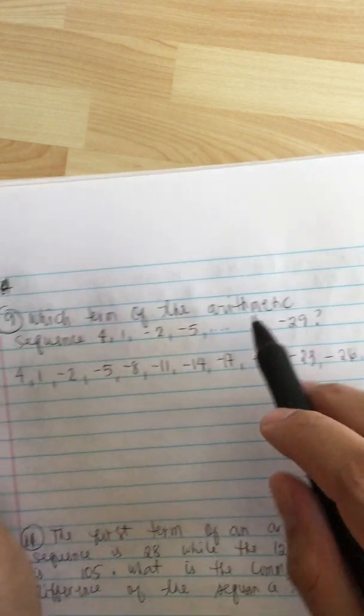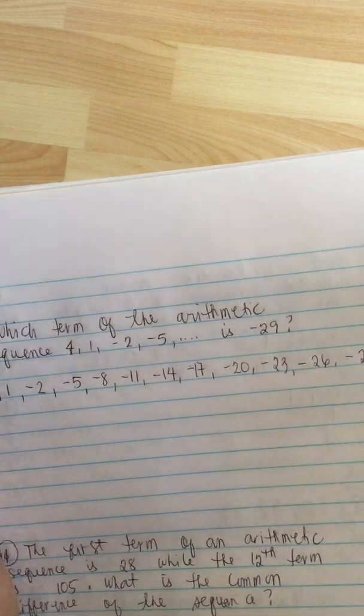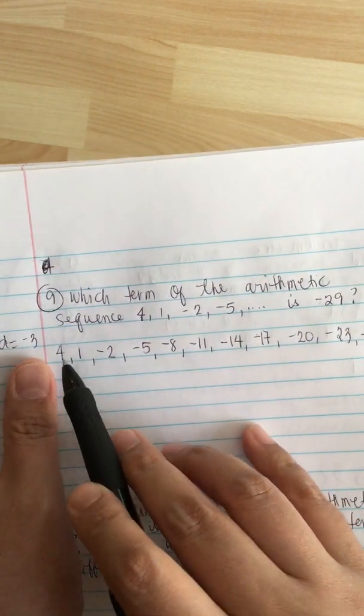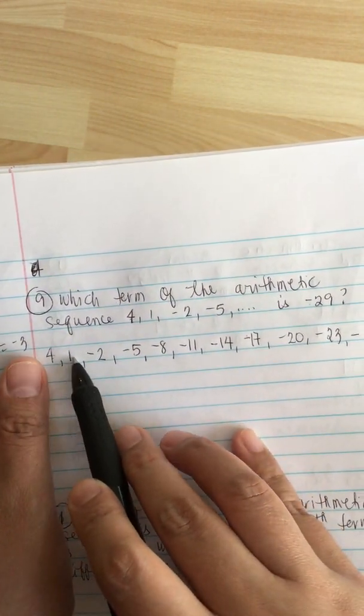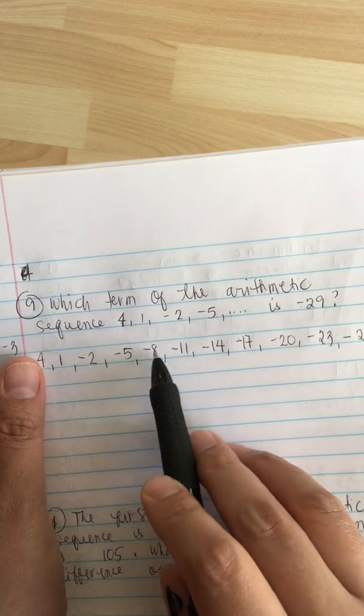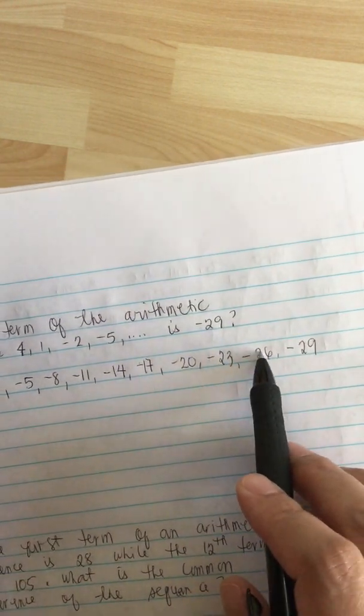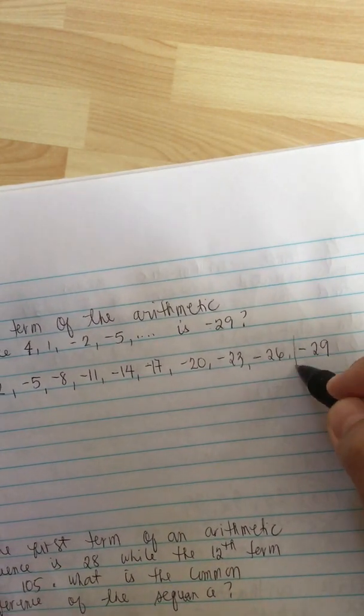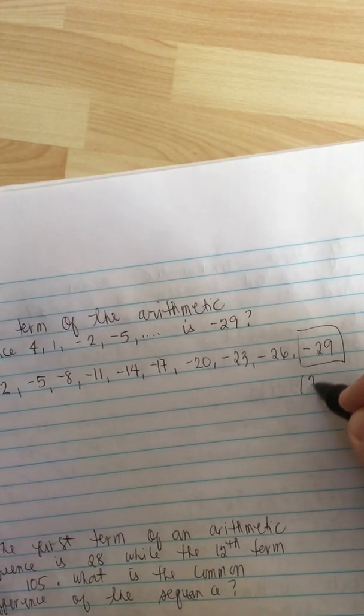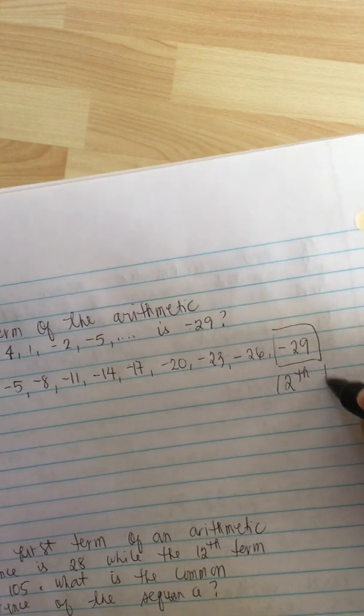So what the question is, what term is minus 29? So we just count. So this is the first term. 1, 2, 3, 4, 5, 6, 7, 8, 9, 10, 11, 12. So this is the 12th term.